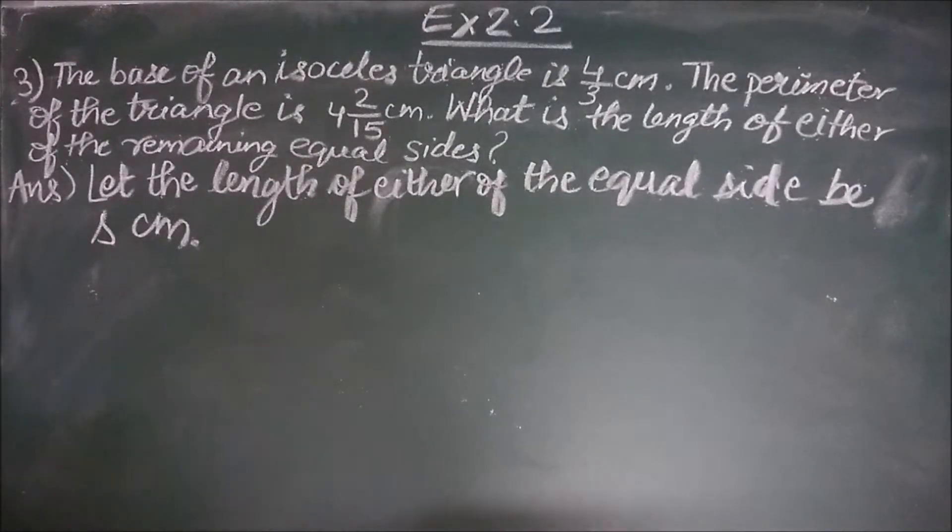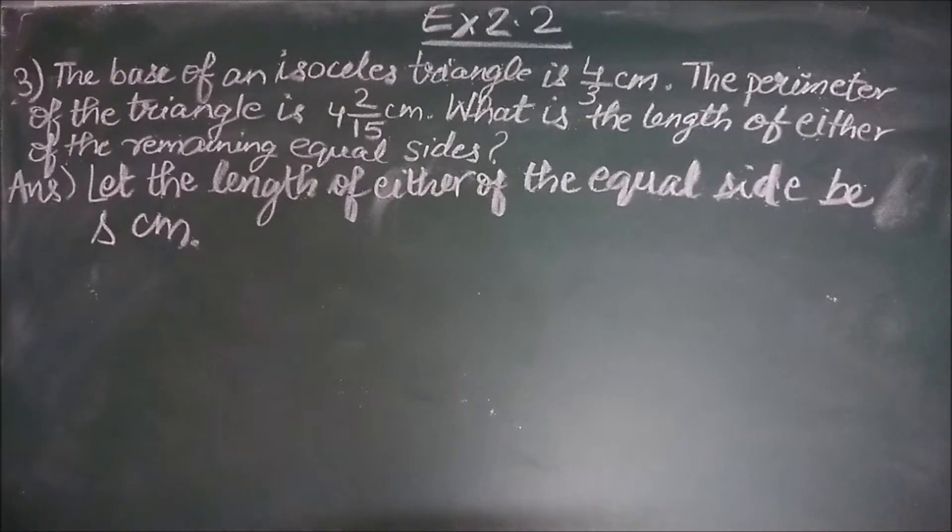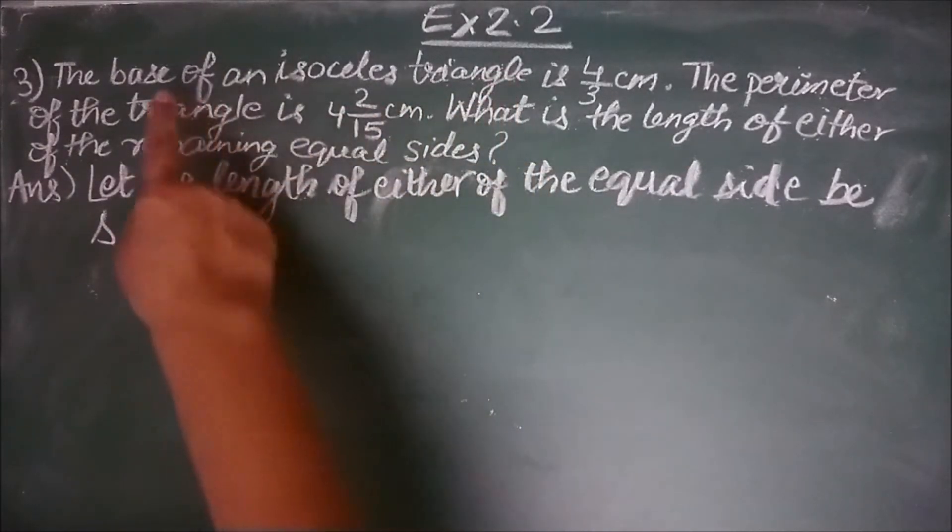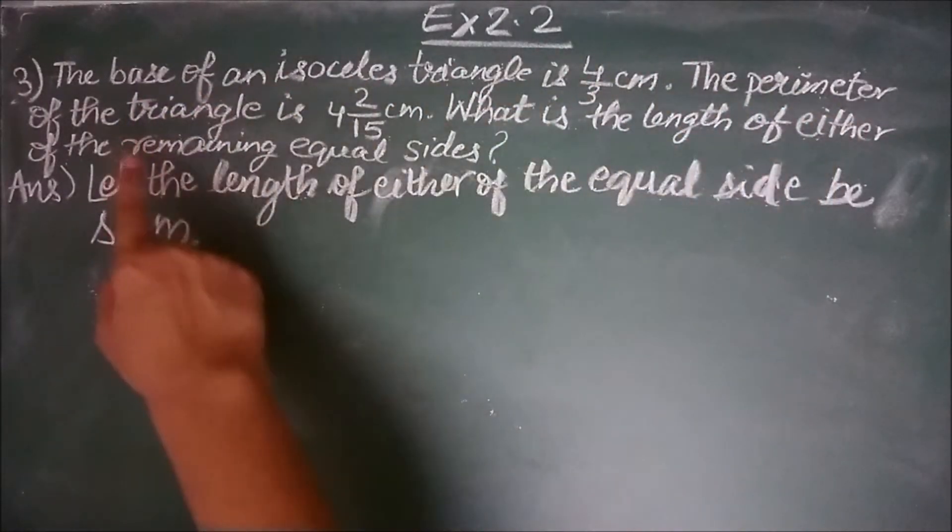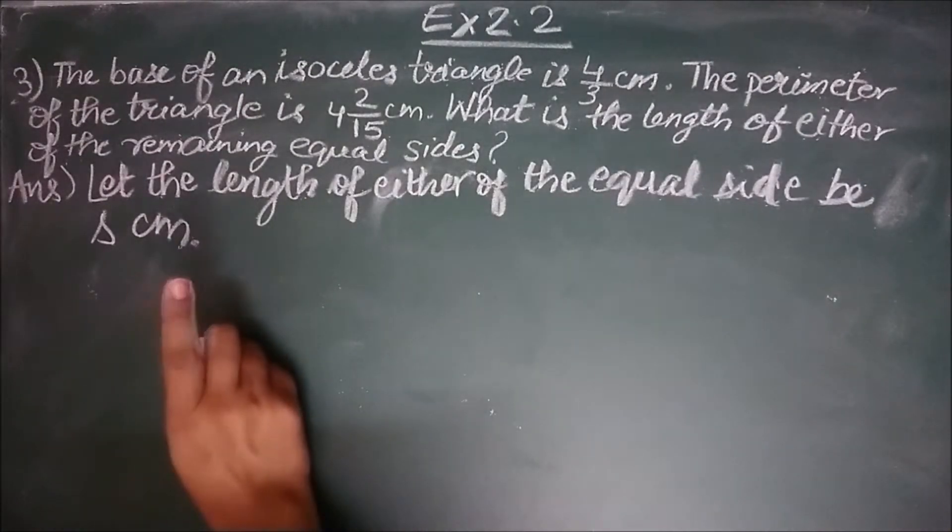And cm unit is taken from the base of the isosceles triangle which is given in cm as well as the perimeter which is also given in cm. So I assume that my result will as well be in cm. Perimeter. Done? Next.